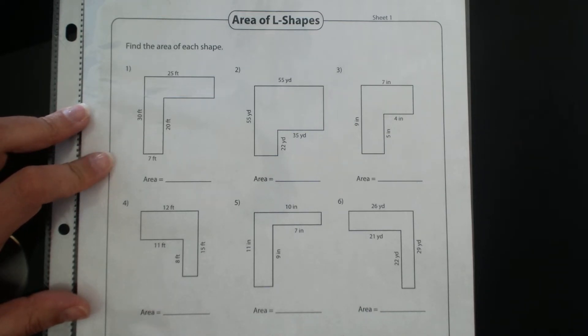Right away I notice that it's an irregular shape. It's not a regular rectangle or square. So now what I need to do is I need to find a shape within a shape. I'm looking for where can I draw a line to either find two rectangles or two squares.